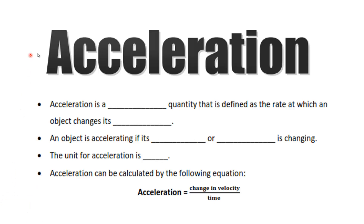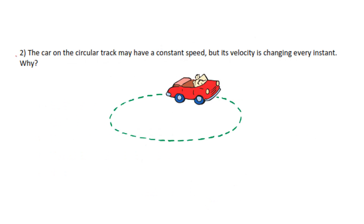Finally, we look at acceleration. Acceleration is a vector quantity — it has size and direction — and is defined as the rate at which an object changes its speed. An object is accelerating if its speed or direction is changing. The unit is meters per second squared (m/s²). Acceleration equals the change in velocity divided by time. For example, a car on a circular track at constant speed is still accelerating because its direction — and therefore its velocity — is constantly changing.